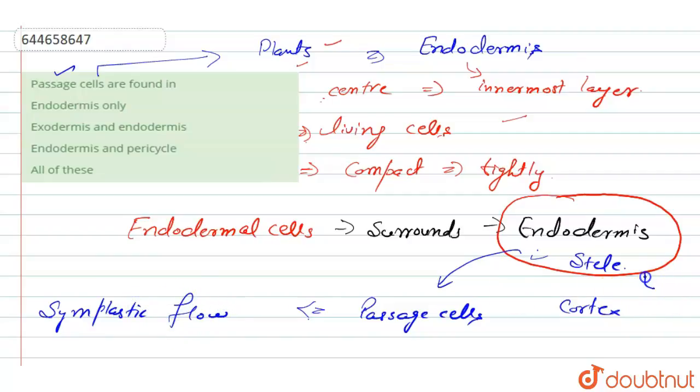Now we can say that the answer for our question is: the passage cells are found in endodermis only. The rest of the options are incorrect here. Thank you.